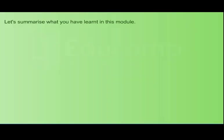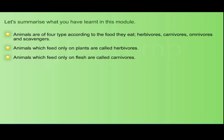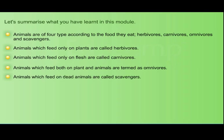Let's summarize what you have learned in this module. Animals are of four types according to the food they eat: herbivores, carnivores, omnivores, and scavengers. Animals which feed only on plants are called herbivores. Animals which feed only on flesh are called carnivores. Animals which feed on both plants and animals are termed omnivores. Animals which feed on dead animals are called scavengers.